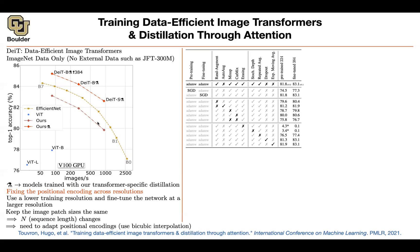To get this performance out of a Vision Transformer, you do a lot of data augmentation: RandAugment, AutoAugment, MixUp, and CutMix — where you cut a portion of one image, patch it into another, and adjust the label accordingly. You also do erasing — erasing some portions of the image — and modify the architecture with stochastic depth, multiple augmentations, removing dropout, and removing exponential moving average.